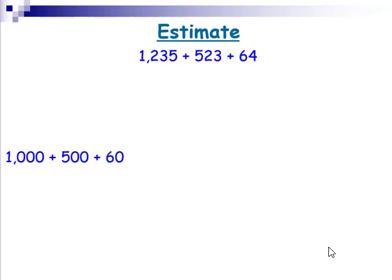One great tool to use when adding a lot of numbers is to estimate first. This is going to give you a close or a ballpark figure of where your answer should be. So if you're off by a lot, you'll know you did something wrong. 1,235, you can say, that's about 1,000. 523 is about 500. 64 is about 60. And now these numbers are a lot easier to add in your head, giving us a total of 1,560. Instead of rounding the 64 to 60, we might have just rounded up to 100. And again, this is close to where the answer should be.